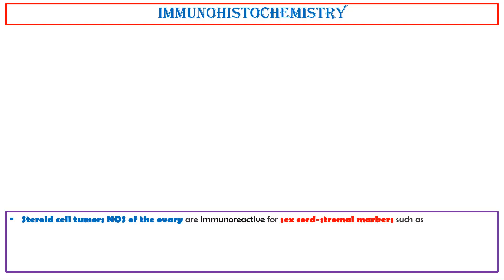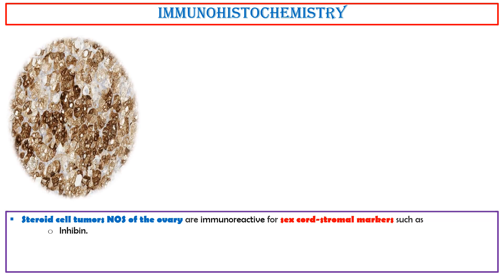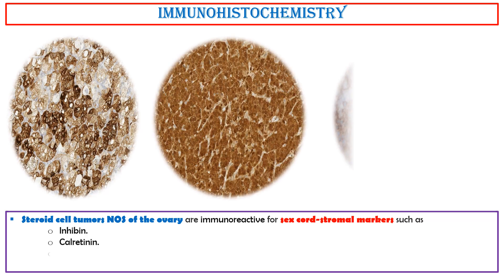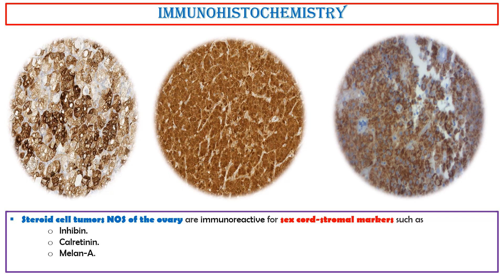Immunohistochemistry. Steroid cell tumors not otherwise specified of the ovary are immunoreactive for sex cord stromal markers such as inhibin, calretinin, and Melan-A. Other frequently positive markers include vimentin, CD10, and CD56.